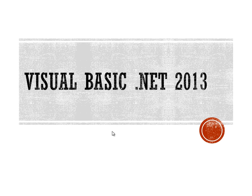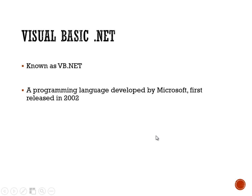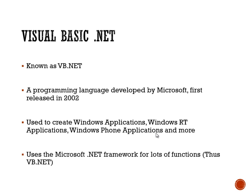First of all, it is known as Visual Basic .NET, or more affectionately known as just VB.NET. It was first produced by Microsoft and released in 2002, and it's used to create Windows applications, store applications, phone applications, and anything else related to the Windows Foundation. The reason it's called Visual Basic .NET is because it utilizes what's called the Microsoft .NET Framework for a lot of its functionality — we'll touch on that in later videos.